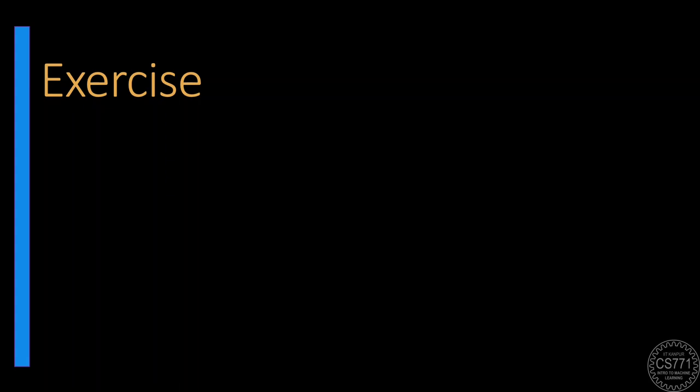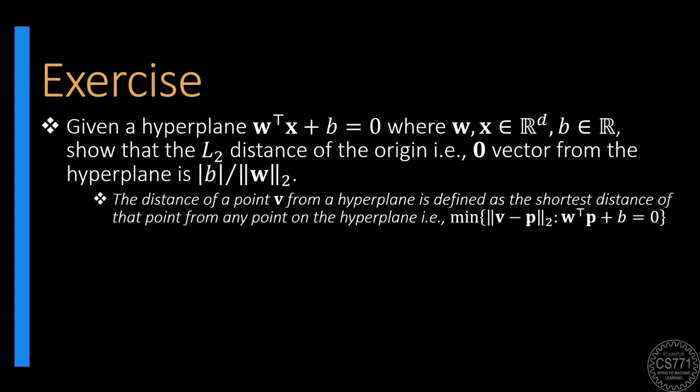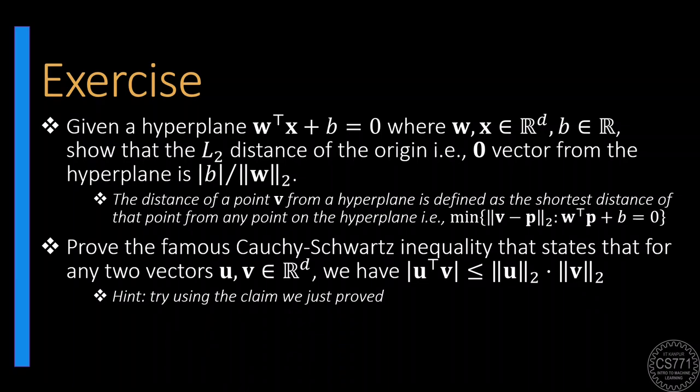Now, at this point, it would be good to take a small break and solve these two simple questions about hyperplanes and dot products. In particular, we will prove the famous Cauchy-Schwarz inequality that gives us an upper bound on the dot products of any two vectors.